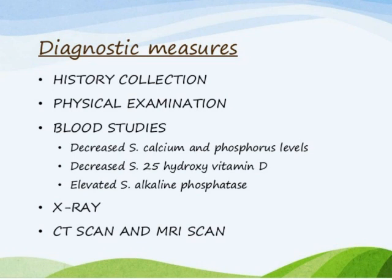For blood study investigations, important parameters include decreased serum calcium and phosphorus levels, and decreased serum 25-hydroxy vitamin D. Serum alkaline phosphatase is also evaluated in blood studies. For imaging investigations, X-ray, CT scan, and MRI are the three tools used to detect the location and site of the affected part.